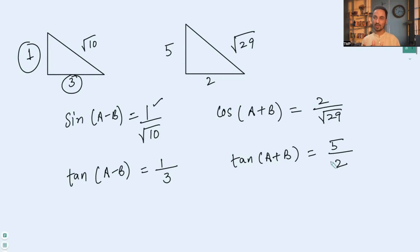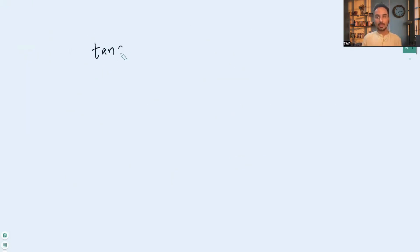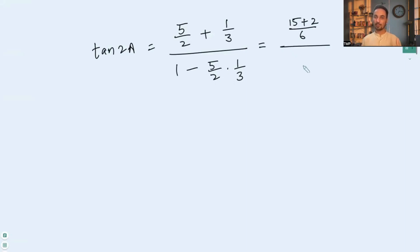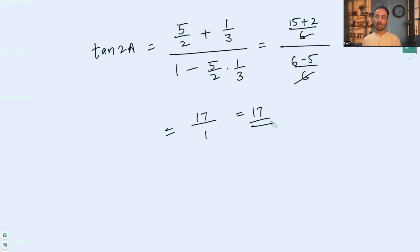Now we substitute these values into the tan 2a formula. tan 2a = (5/2 + 1/3) / (1 - (5/2)(1/3)). Taking LCM 6 in the numerator gives (15 + 2)/6, and in the denominator (6 - 5)/6. The 6s cancel, leaving (15 + 2) / (6 - 5) = 17/1. So tan 2a = 17.